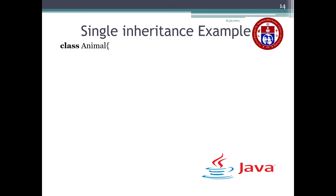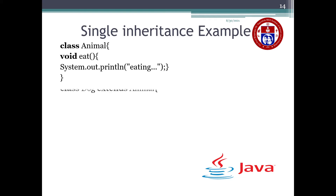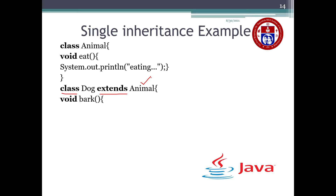Initially I have created one base class. The class name is Animal, followed by one method called eat. The return type of this method is void and I'm printing the message 'eating'. Then followed by one derived class — my derived class is Dog. The class keyword followed by child class name Dog, then extends is a keyword followed by Animal as the base class. I have written a method named bark with return type void and printing the message 'barking'.